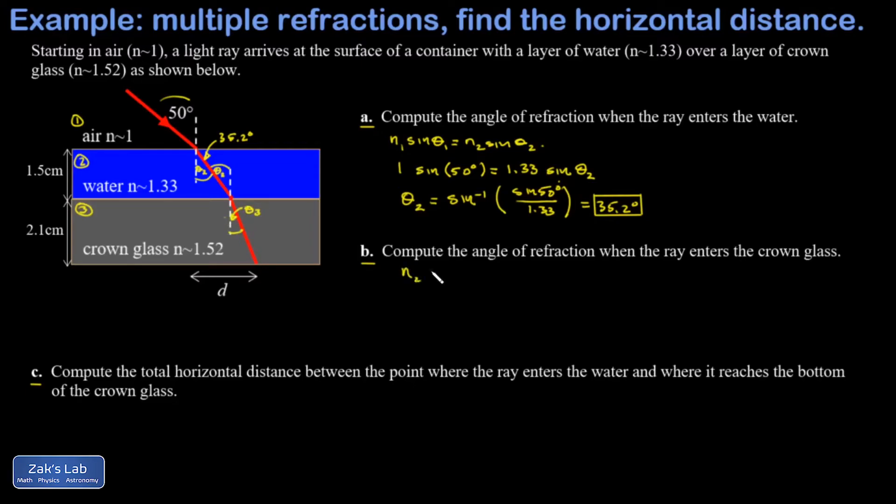We write down n2 sine theta 2 equals n3 sine theta 3, and I plug in the index of refraction for water. Remember, material 2 is the water. Sine of the incident angle onto the crown glass, which is theta 2 or 35.2 degrees. Index of refraction for the crown glass: 1.52.